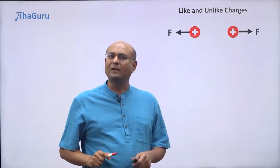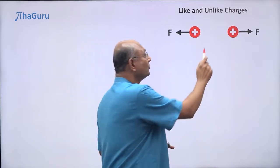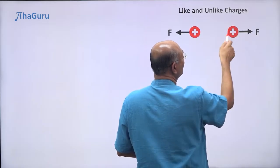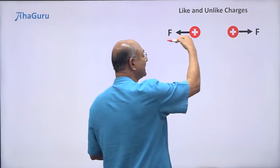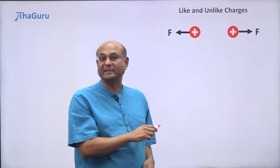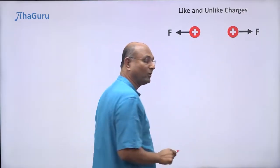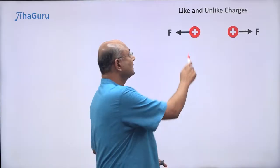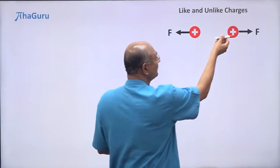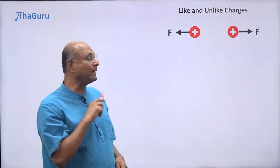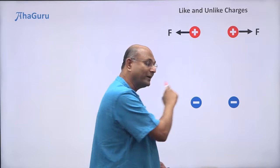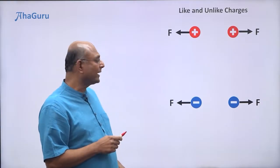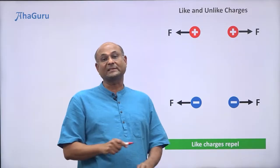Why are these two forces equal? Newton's third law tells us that if object A pushes object B with a force F, then object B must push object A with a force F in the opposite direction. So these two forces must be equal and opposite — that comes from Newton's third law. We also know that positive charges repel each other, and the same applies to two negative charges. So we can say that like charges repel.